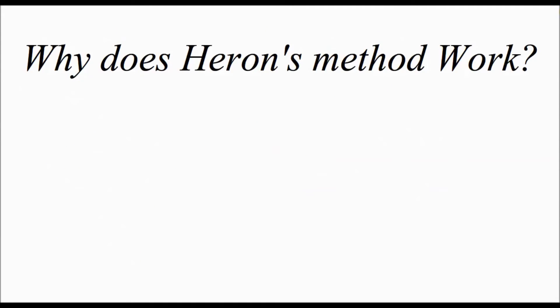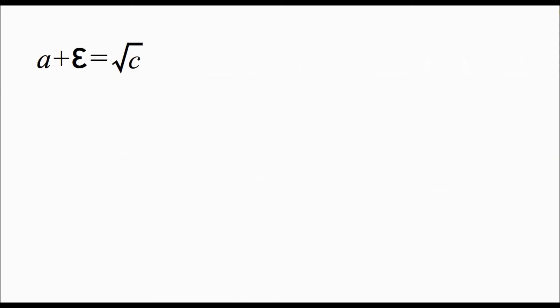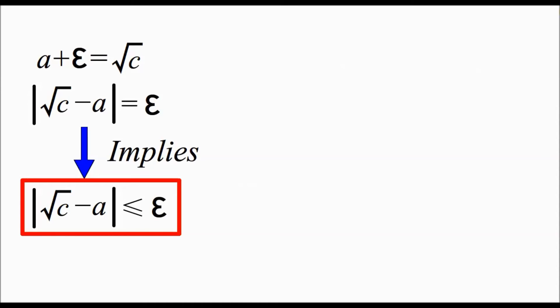Right now, you must be curious why it works. To explain that, we must think about it from another perspective. If a plus epsilon equals the square root of c, then the absolute value of the square root of c minus a equals epsilon. This implies that this inequality right here.